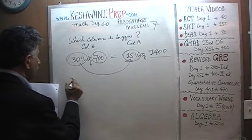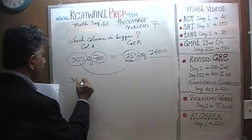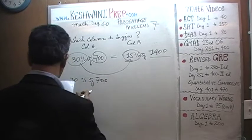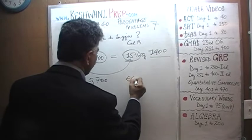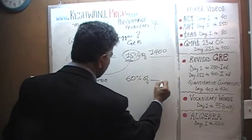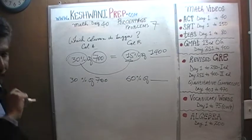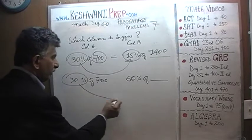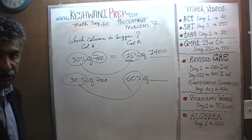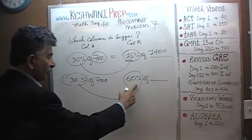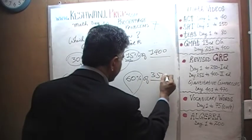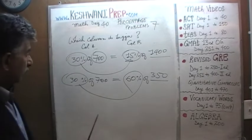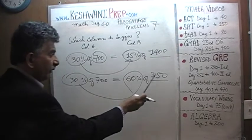How about 30% of 700 versus 60% of what? We have twice the percentage — instead of 30% we have 60%. Since the percentage is twice as much, the amount has to be half as much in order for them to be equal. Instead of 700 we have half of 700, which is 350.